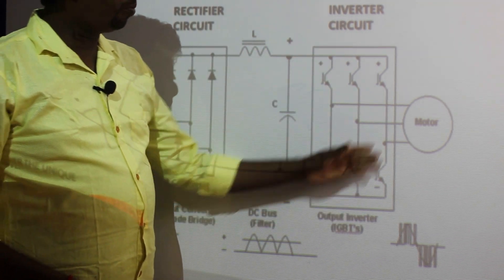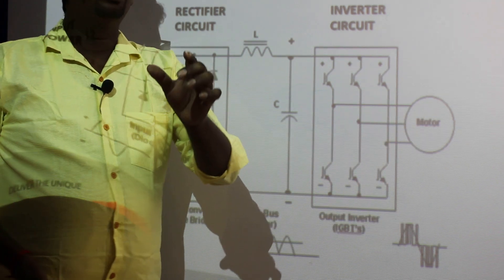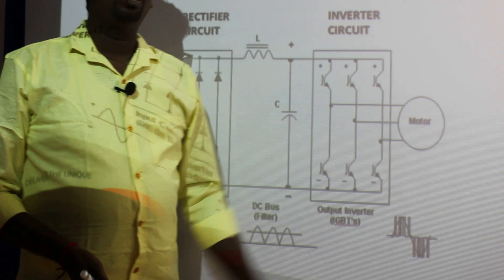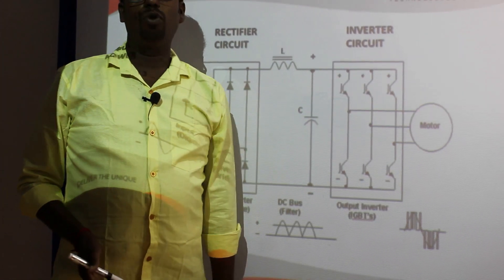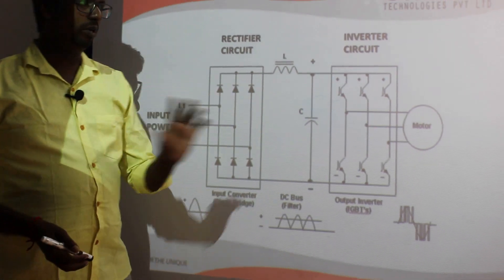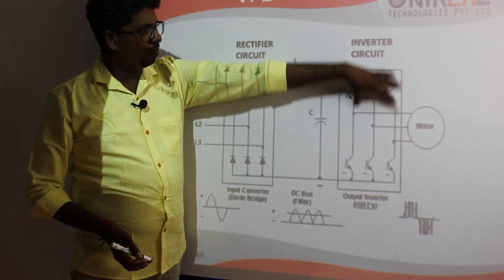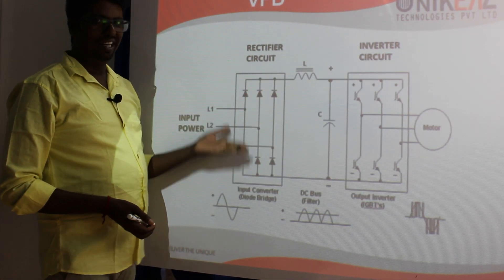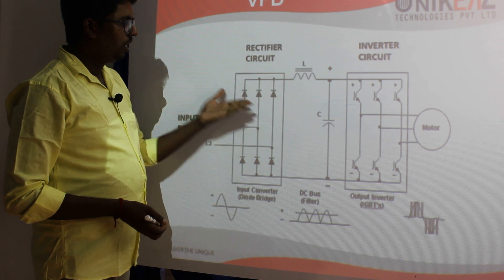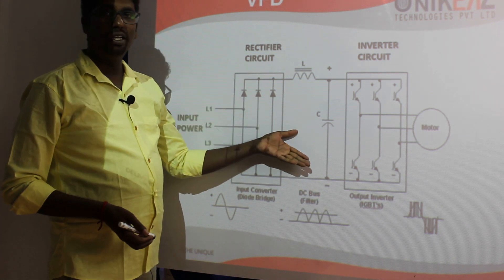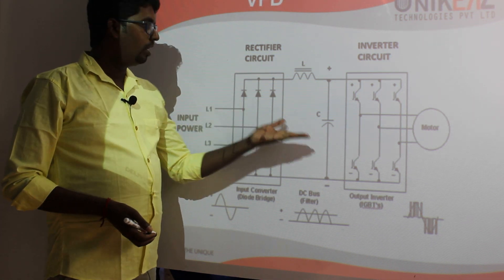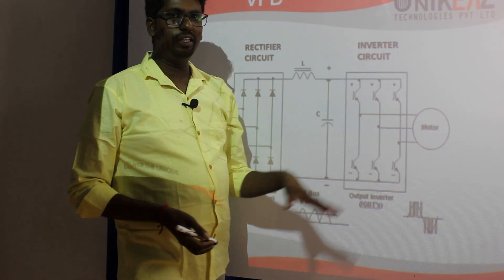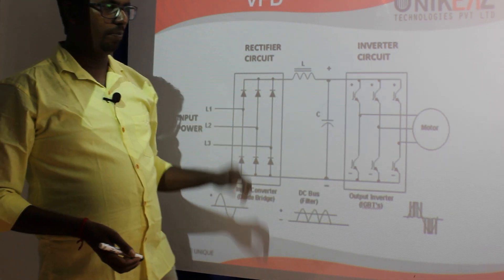Then we switch to our frequency variation to drive the motor. You already know that if we use a rectifier circuit, one AC input gives DC voltage output. What is the difference? That is what we need — to convert AC to DC as a first step.